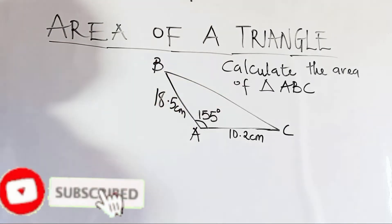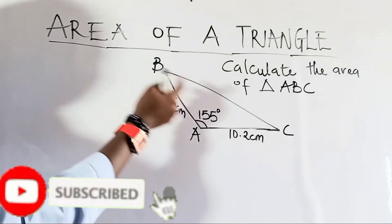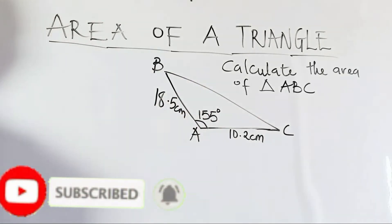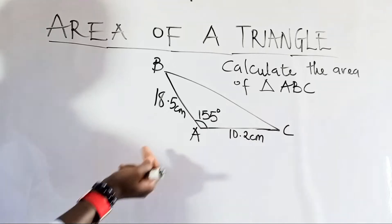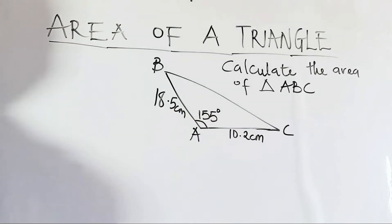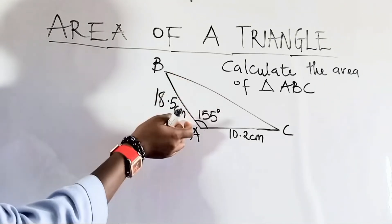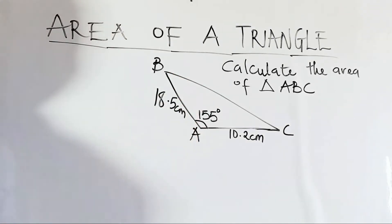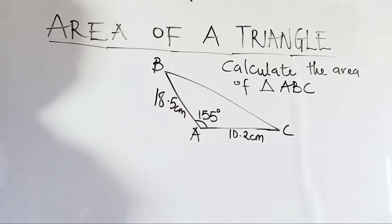We have our next example here and we are to calculate the area of triangle ABC. Now this triangle is quite different from the previous one because we have an obtuse angle here, 155 degrees, unlike in the previous one. In the previous example, we have a height that is perpendicular to the base and is absent here. So we're going to use a different formula to solve for the area of this triangle.